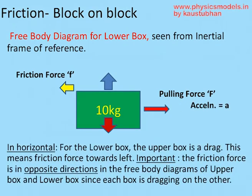In the horizontal direction, the green box is being pulled towards the right by force F and accelerating at A. The forces acting on the green box horizontally are the forward pulling force F and a backward friction force μN shown as a yellow arrow. This backward force exists because the green box is dragging the upper box along, and the upper box exerts a dragging force backward on the green box. It is very important to put the correct direction in the free body diagrams.